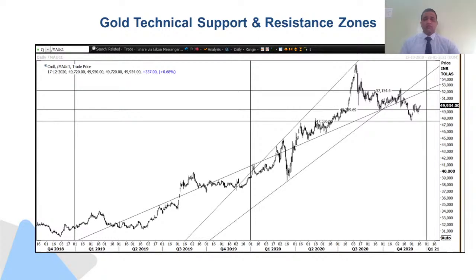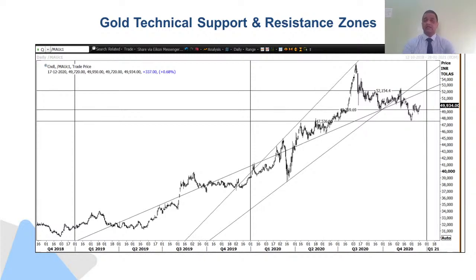Now that we have discussed major commodity fundamentals, we will discuss where gold prices are headed. At present gold stands at around the 50,000 rupees mark. You can clearly see on this particular screen that the next possible move for gold prices on the MCX platform is 52,000 followed by 56,000. There is a major hurdle at around the 52,000 mark, but the direction of gold, taking into consideration global uncertainty and the pandemic, would be on the higher side. The next possible mark in a three to six months timeframe would be around 52,000 followed by 54,000.